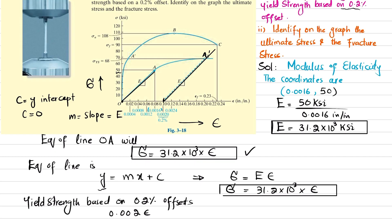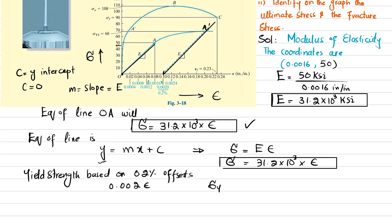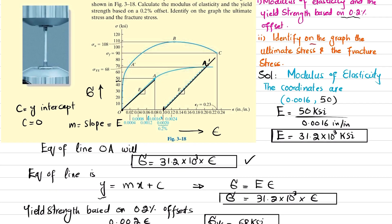For the 0.2 percent offset, we begin at a strain of 0.002 inch per inch and graphically extend a line parallel to line OA until it intersects the stress-strain curve at point A′. The stress at this point is the yield stress, and you can see it is 68 ksi. Therefore, the yield strength equals 68 ksi.